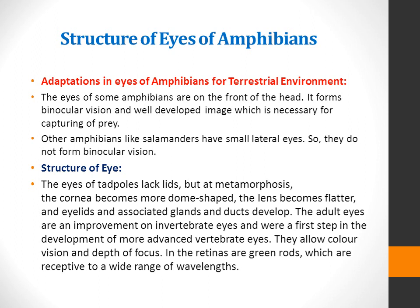The eyes of some amphibians are on the front of the head, forming binocular vision, which provides a well-developed image necessary for capturing prey. Other amphibians like salamanders have small lateral eyes and so do not form binocular vision.